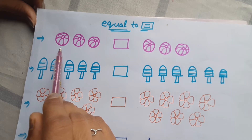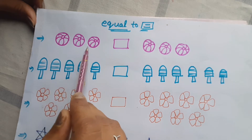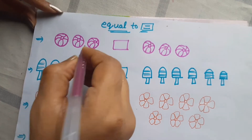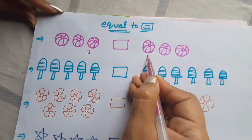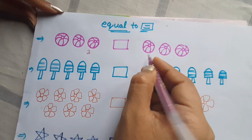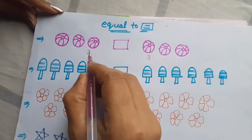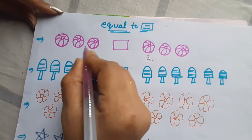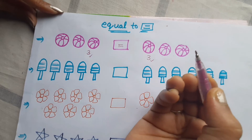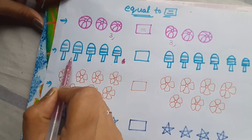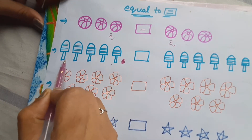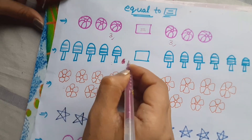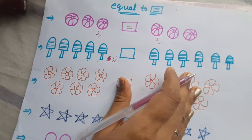How many balls are here? Let's count — 1, 2, 3. Yes, here 3 balls. This side — 1, 2, 3 — this side also 3 balls. So 3 equals 3, same, so equal to. How many ice creams are here? 1, 2, 3, 4, 5 — that's 5.